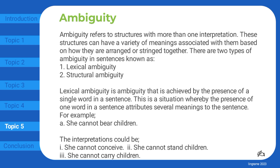Ambiguity refers to structures with more than one interpretation. These structures can have a variety of meanings associated with them based on how they are arranged or strung together. There are two types of ambiguity in sentences: lexical ambiguity and structural ambiguity. Lexical ambiguity is ambiguity achieved by the presence of a single word in a sentence — a situation whereby the presence of one word attributes several meanings to the sentence.